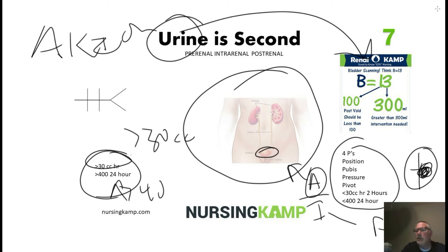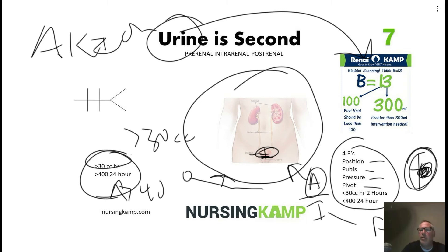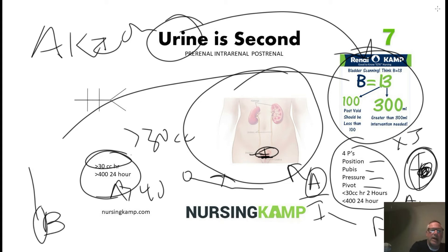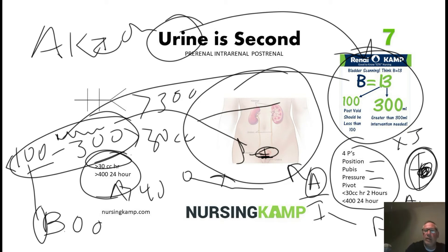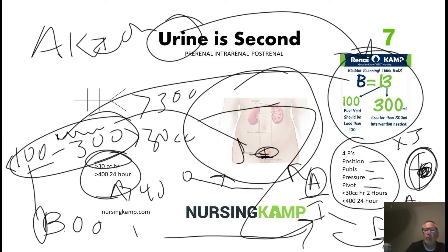The four P's of a bladder scan are: position, pubis, pressure, and pivot. We locate the symphysis pubis, apply the probe with pressure, and rotate it. We perform this three times and average the results. A normal bladder scan result is 100 to 300 cc's. Less than 100 means no retention — good. Greater than 100-300 means urine remains in the bladder. Greater than 300 requires intervention, such as placing a Foley catheter and notifying the physician.